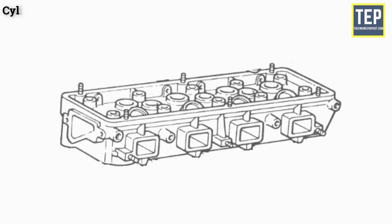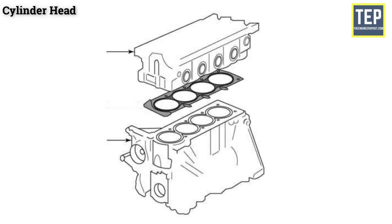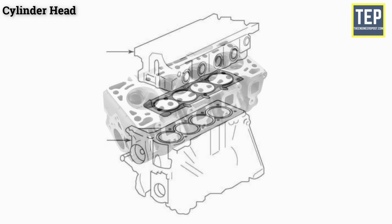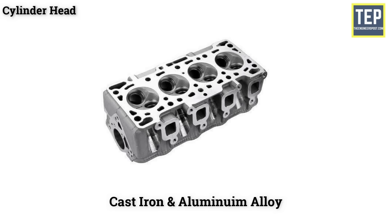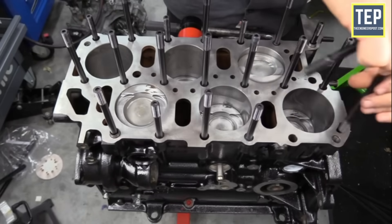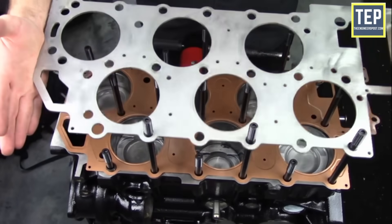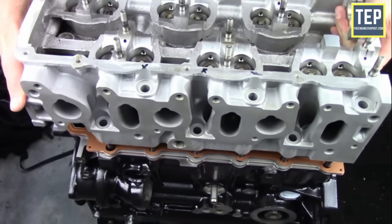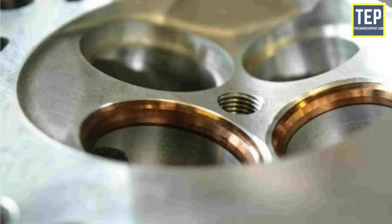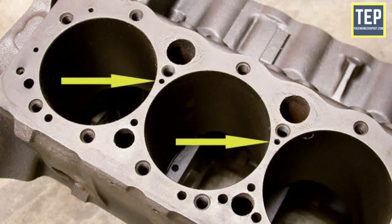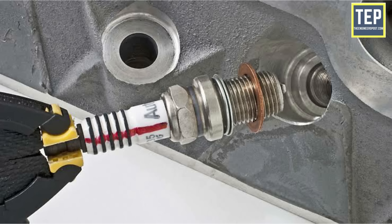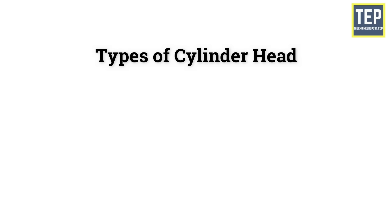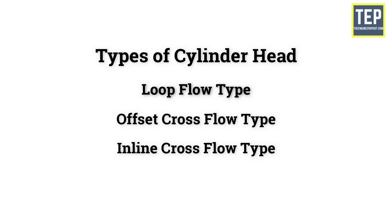The cylinder head is another main part of an engine — it forms a joint between the cylinder head and cylinder block. It is usually made of cast iron and aluminium alloy, attached using studs and gaskets to provide a tight, leak-proof joint. The cylinder head contains a combustion chamber above each cylinder, and also contains valve guides, valve seats, ports, coolant jackets, and threaded holes for spark plugs. There are three types of cylinder head based on valve and port layout: loop flow type, offset cross flow type, and inline cross flow type.